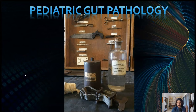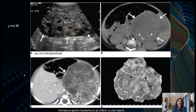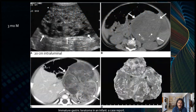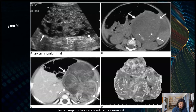Now let's go over some pathology, beginning in the stomach. Quite frankly, you're not going to see a lot of gastric pathology — that's going to be more an endoscopic diagnosis or CT/MRI. But here is a three-month-old with a 20-centimeter intraluminal lesion of the stomach.